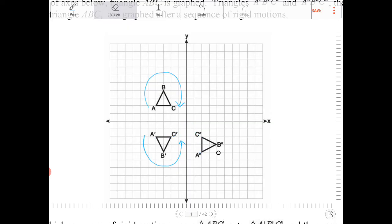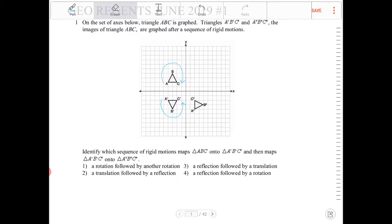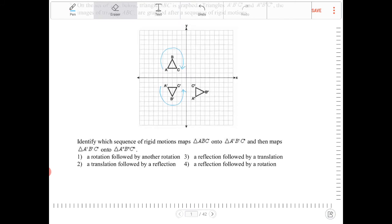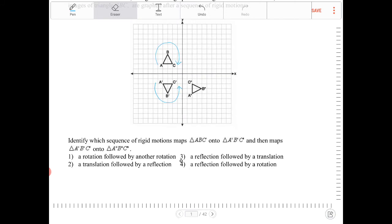So we're looking for, in the answer choices, a reflection and then a rotation. And it looks like that would be option number four, a reflection followed by a rotation.